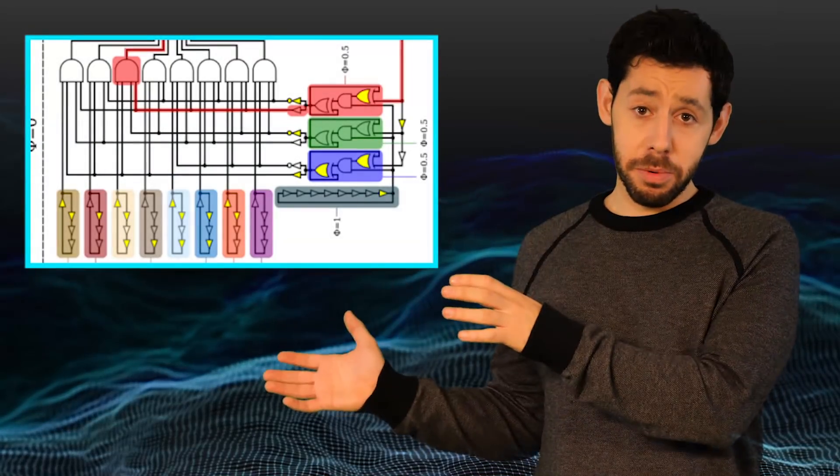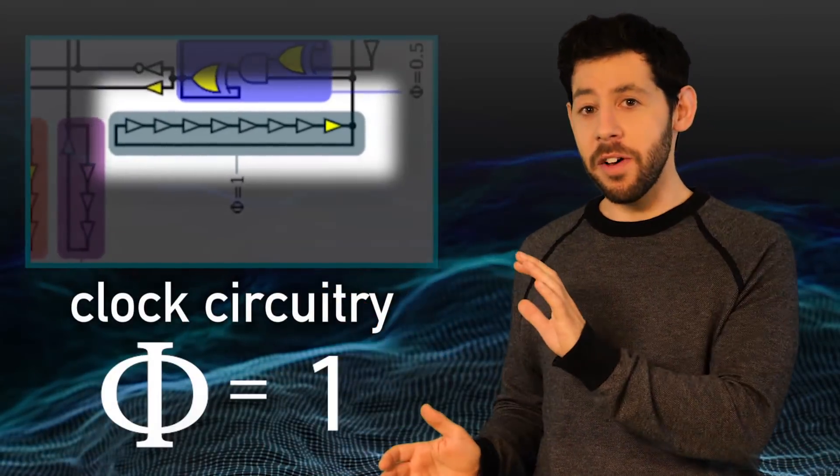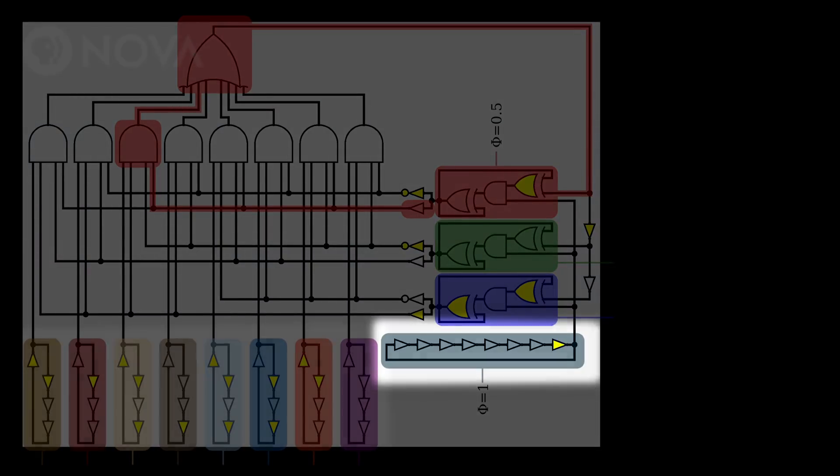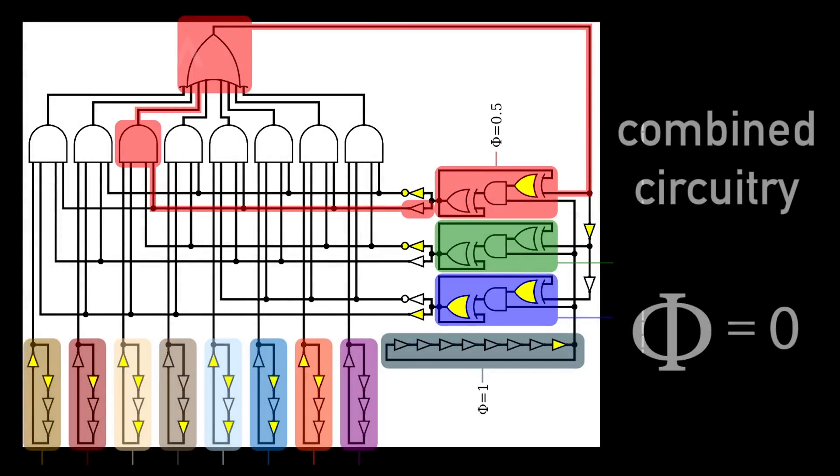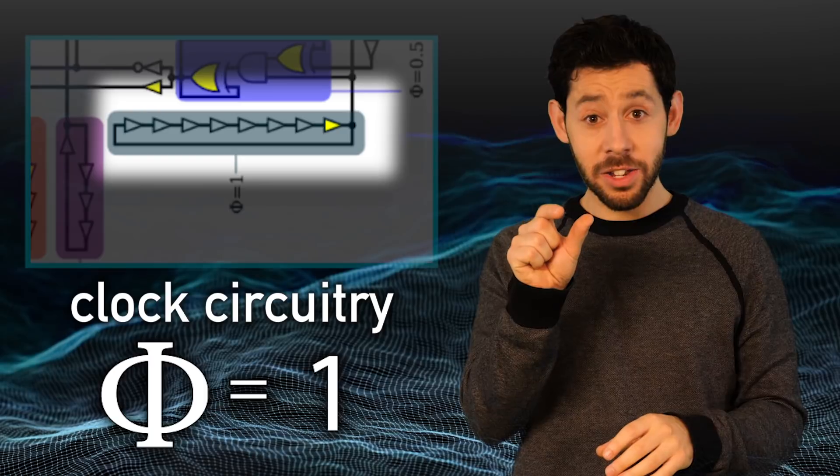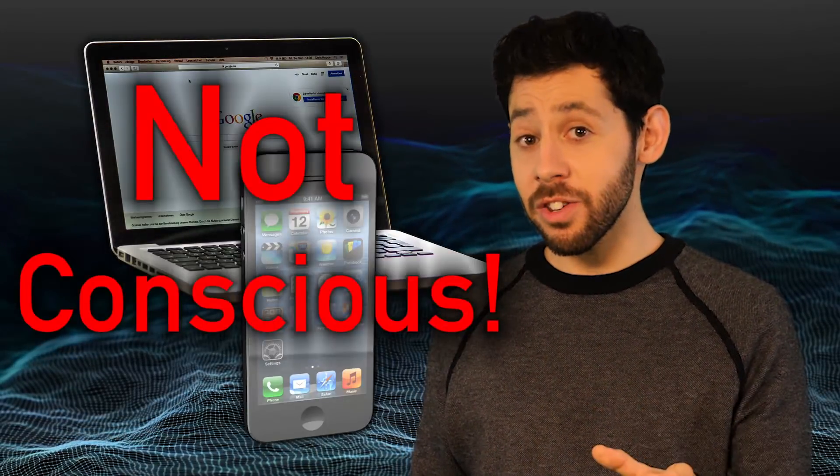Here's the circuitry of a simple computer. A single simple loop, like the clock here, has a phi of one. But the computer as a whole has these separate sections with no loops connecting them all, so it has a phi of zero. That's right, the clock has a little bit of consciousness, but the computer as a whole has no consciousness. So that means that your computer, or the phone Siri's running on, is pretty much not conscious.